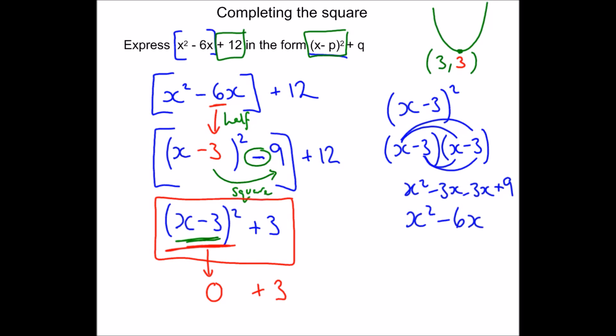To find the minimum: for the x-coordinate we look inside the bracket and change the sign — inside the bracket was minus 3, so the x-coordinate of the minimum is positive 3. For the y-coordinate we just leave the plus 3 outside the bracket with the sign as it is. For example, if I had x plus 2 squared minus 8, to find the minimum I'd change the sign of the x part from plus 2 to minus 2, giving an x-coordinate of minus 2, and leave the y part as minus 8.